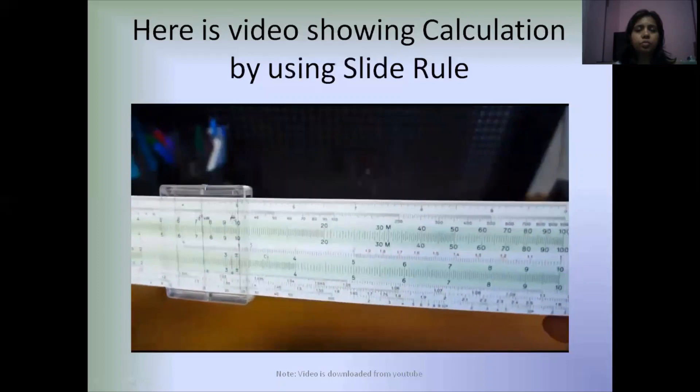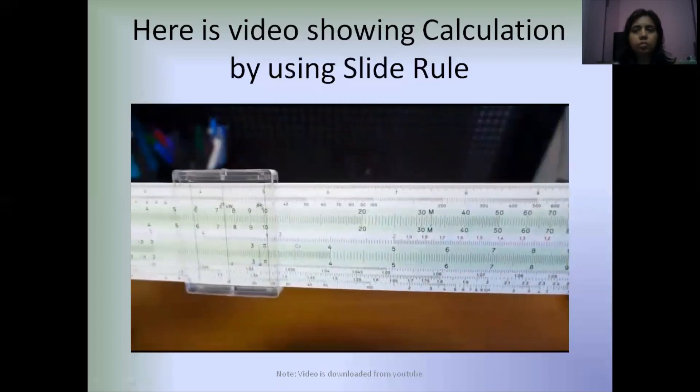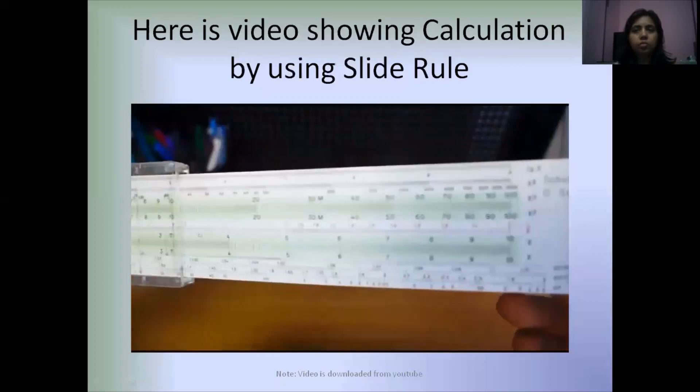Slide rules were used up until 1972 when the first pocket scientific calculator, the HP-35, was released.